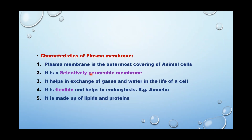To summarize the characteristics of the plasma membrane: it permits the exit and entry of molecules, so it is called a selectively permeable membrane. Exchange of gases is also possible through this membrane. It is flexible because of the presence of lipids and proteins. In unicellular organisms like amoeba, this flexibility helps them take in food through a process called endocytosis, where the outer layer forms finger-like structures called pseudopodia to engulf food.